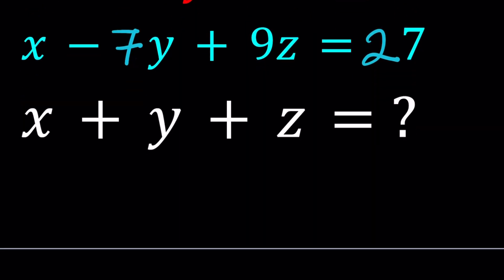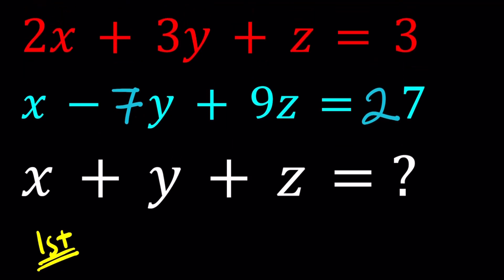For my first method, I'm going to think about what is called a linear combination of these two equations. So what's a linear combination? A linear combination is basically we take these two equations, multiply them by something, and then add them together.